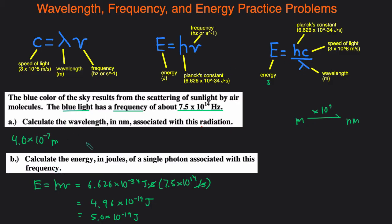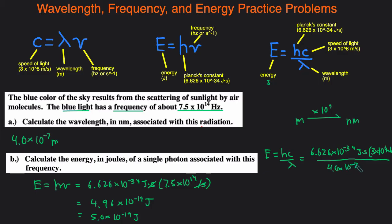We can also solve for energy using the wavelength, because in part A we found the wavelength of blue light is 4.0 times 10 to the negative 7 meters. Since we have the wavelength, we use E equals hc over lambda. H is Planck's constant 6.626 times 10 to the negative 34 joules times seconds, c is 3 times 10 to the 8th meters per second, divided by the wavelength 4.0 times 10 to the negative 7 meters. The meters cancel out, the seconds cancel out, and we're left with joules — we get the same answer: 5.0 times 10 to the negative 19 joules.